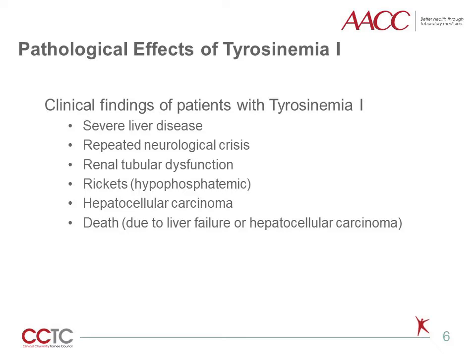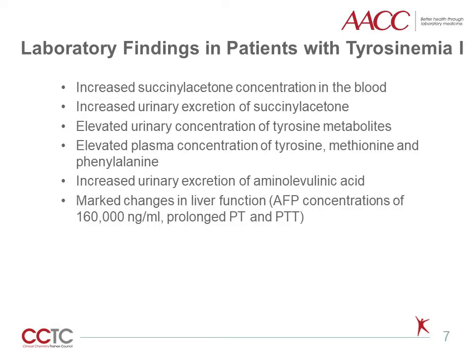If severe and chronic, individuals develop renal tubular dysfunction involving a Fanconi-like renal syndrome with abnormal excretion of amino acids in urine, renal tubular acidosis, and phosphate loss. Hypophosphatemic rickets result with normal serum calcium concentrations. With little to no management of tyrosinemia 1, these children stand a higher risk of hepatocarcinoma that often leads to death.